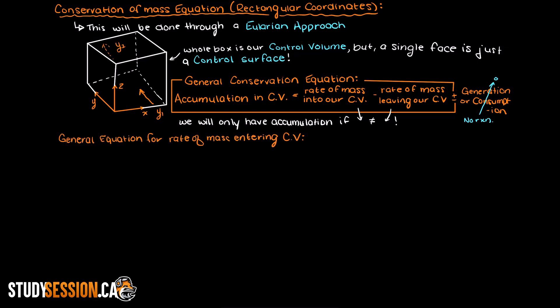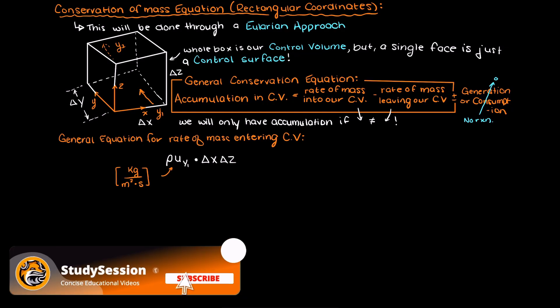The mass entering this face is going to equal the mass flux, units of kg per m² per second, times the control surface area, which is the size of our box in both the x and z direction as you can see here. So through only looking in the y direction, this is our rate of mass in.